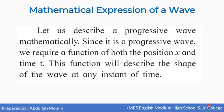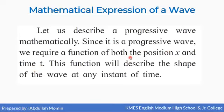So let us describe a progressive wave mathematically. Since it is a progressive wave, it is continuously traveling, so we require a function of both position x and time t. This means the position keeps changing with time, and this function will describe the shape of the wave at any instant of time.